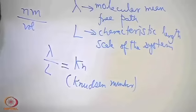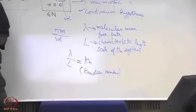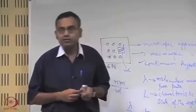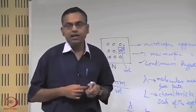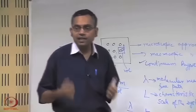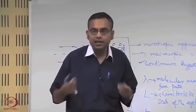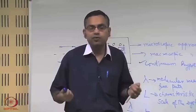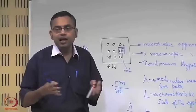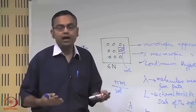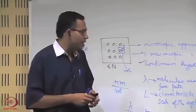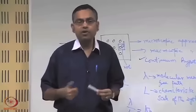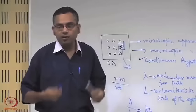A small Knudsen number means the system is not rarefied and the continuum hypothesis can be used. But if the Knudsen number is large, the system has relative rarefaction, meaning the continuum hypothesis cannot be used and one has to resort to either a statistical approach through the microscopic approach, or molecular dynamics to analyze the problem. If the continuum hypothesis can be used, it is very convenient because we can use the well-known rules of differential calculus for solving the problems.